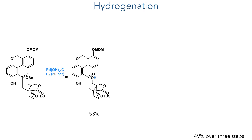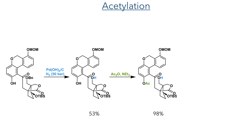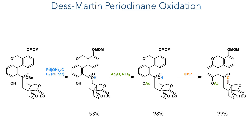With this in hand, the benzyl group was deprotected using catalytic hydrogenation, and the more acidic phenol was selectively protected by deprotonating with triethylamine and reacting with acetic anhydride. DMP was then employed once again to oxidise the primary hydroxyl group, forming the target aldehyde in a 99% yield.